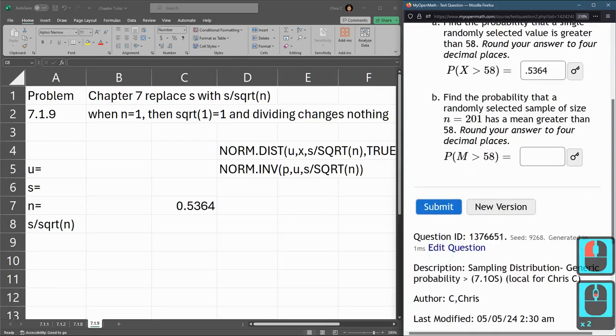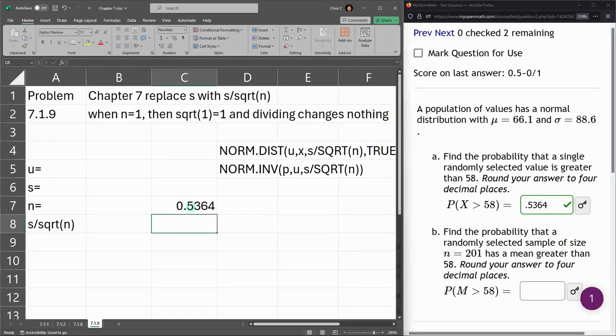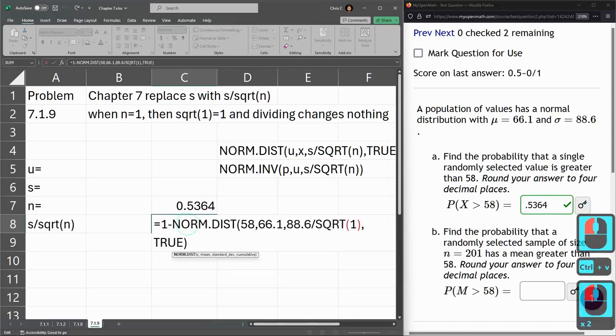0.5364. Now we'll hit submit. Get it right. So I'm going to copy, paste. We're going to edit this now.